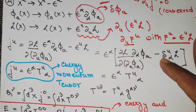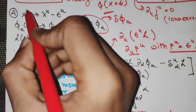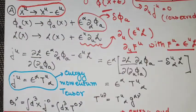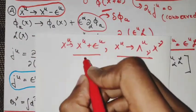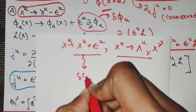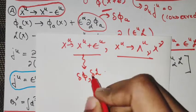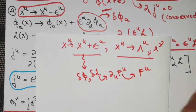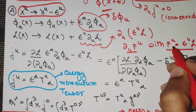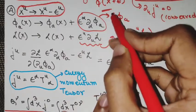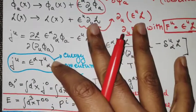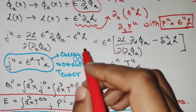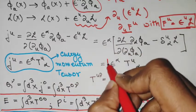Given the translation transformation, we have recognized the corresponding delta phi and delta L. Since delta L is of the form del_mu f^mu, we identify f^mu. Once we have f^mu and delta phi, we plug them into the general formula for the conserved current and simplify.